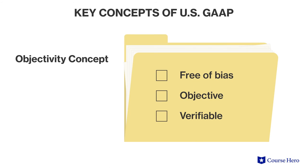Concept number three is the objectivity concept. The objectivity concept states that all accounting records should be free of bias. In other words, financial information should not be misleading, but objective and verifiable.